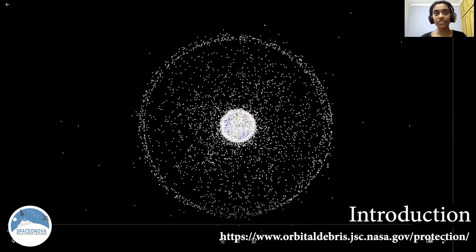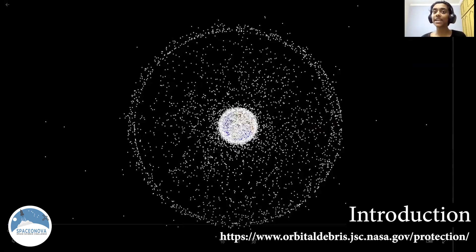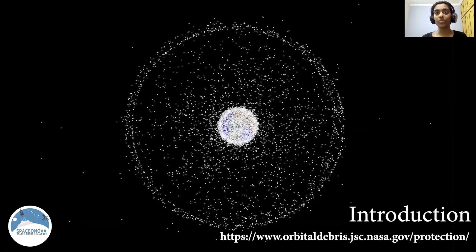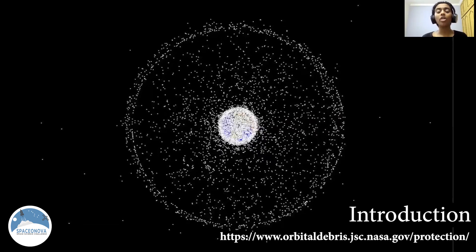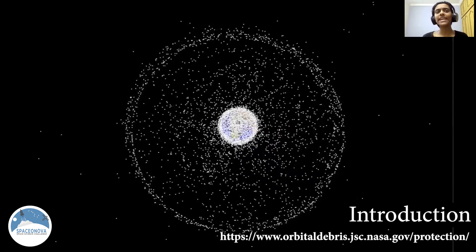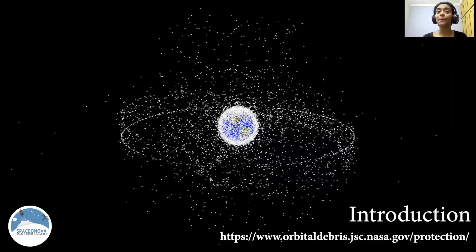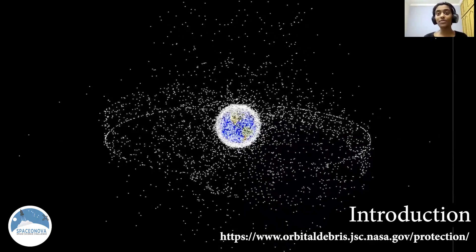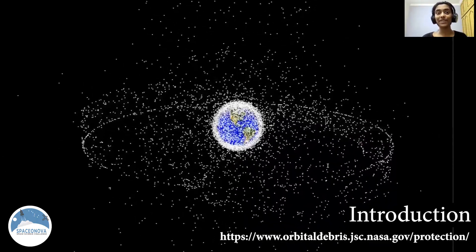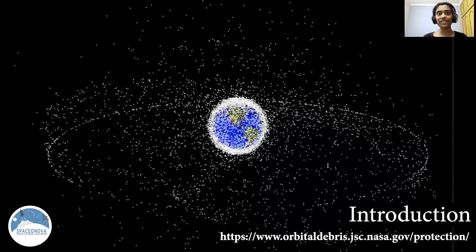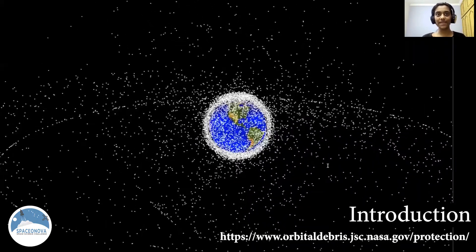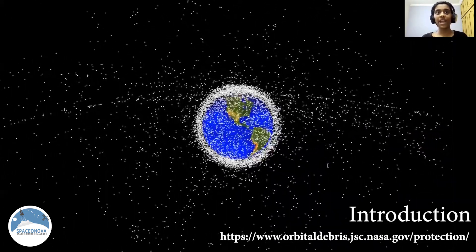The dots in this animation show payloads and debris in orbit around the Earth. The objects are generally 10 centimeters or larger, but there are many more debris objects too small to be tracked that pose a threat to operating spacecraft.